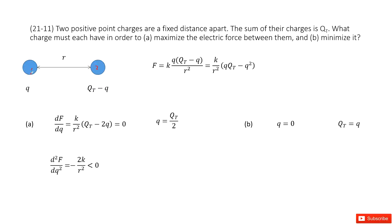So we can consider the charges for particle 1 as Q. For particle 2, the charges is Qt minus Q.